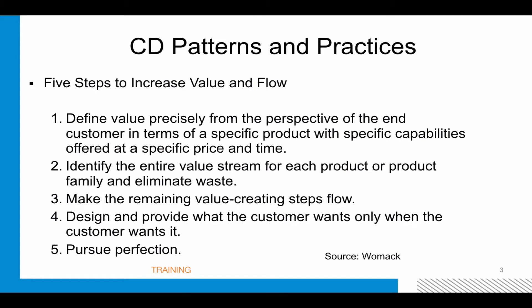There's Womack, the original lean guru and one of the original lean authors — the people who looked at lean manufacturing. He has five steps to increase value flow: define value precisely from the perspective of the end customer in terms of specific product, capabilities, price, and time; identify the entire value stream for each product and eliminate waste — a big part of lean is eliminating waste; make the remaining value-creating steps flow; design and provide what the customer wants only when the customer wants it; and pursue product perfection.